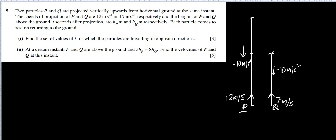After Q reaches its peak, it starts going down while P is still going up — this is where their directions are opposite. We need to find the time Q takes to reach its highest point and the time P takes to reach its highest point. That time interval is the set of values of T where they are traveling in opposite directions. After that, P also turns back and both fall downward, so they are in the same direction again.